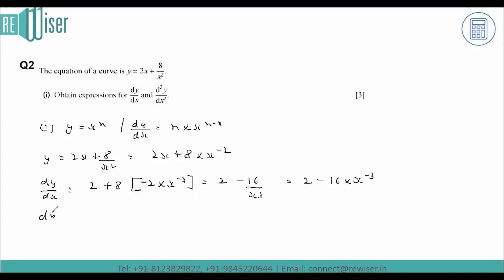If I'm going for the second order derivative, we know that 2 is a constant, so its derivative will be 0.